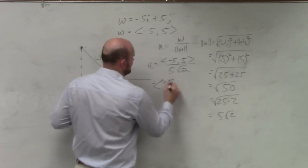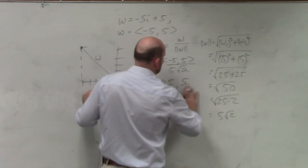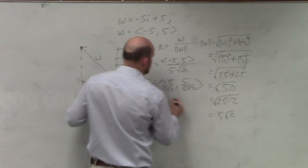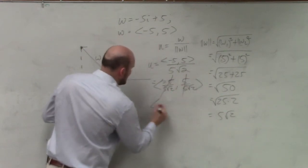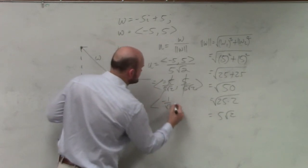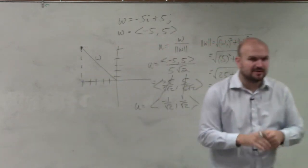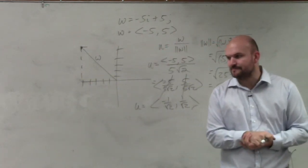And therefore, we get negative 5 over 5 square root of 2, comma 5 over 5 square root of 2. My unit vector is now equal to negative 1 over the square root of 2, comma 1 over the square root of 2. Do not need to simplify. We'll leave it just like that. It's perfectly fine. Alright?